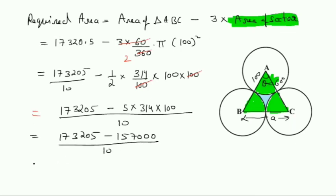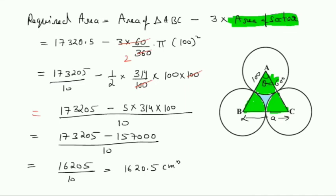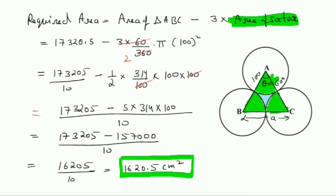After subtraction, we get 16205/10, which gives 1620.5 cm². So the area of the shaded region is 1620.5 cm². I hope you have understood this.